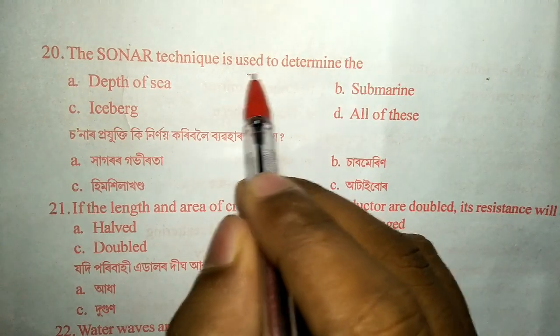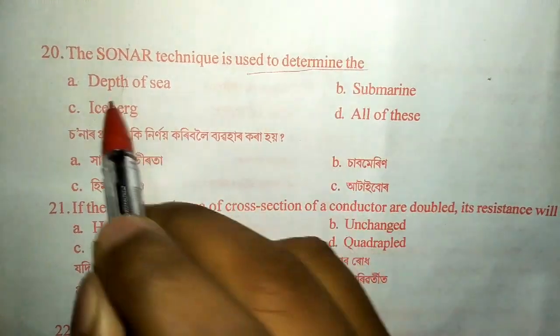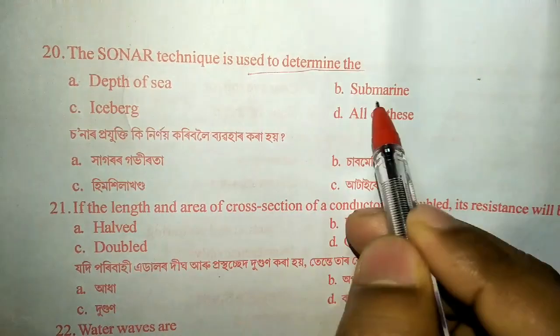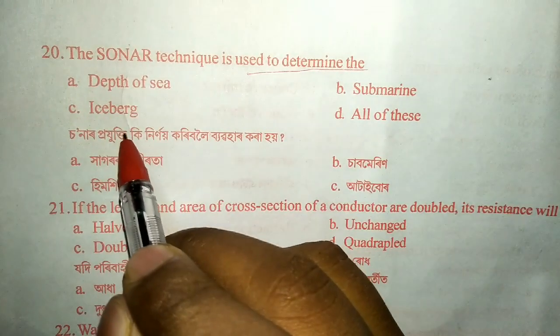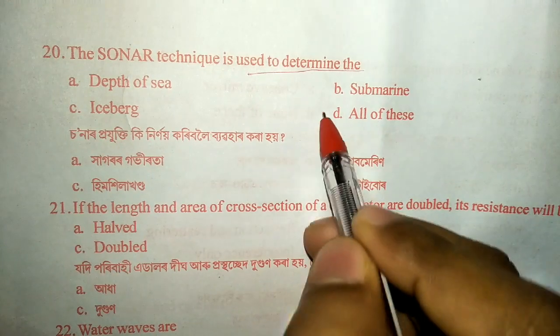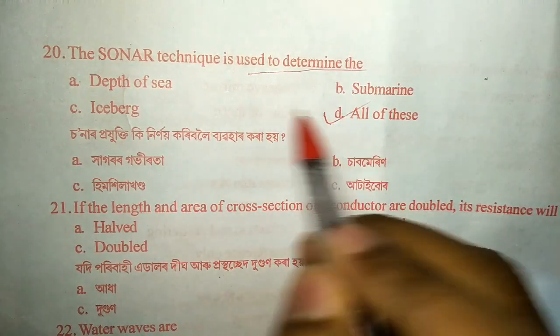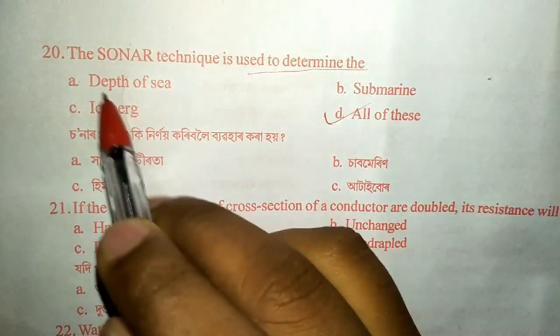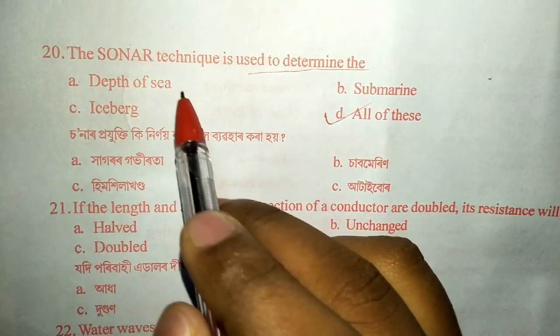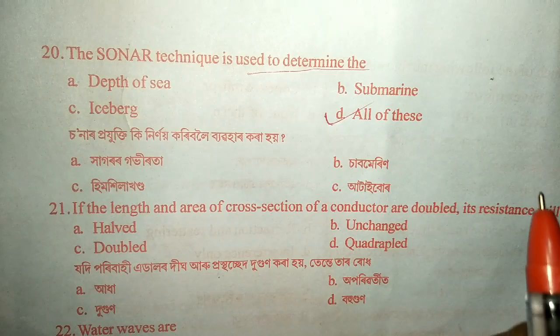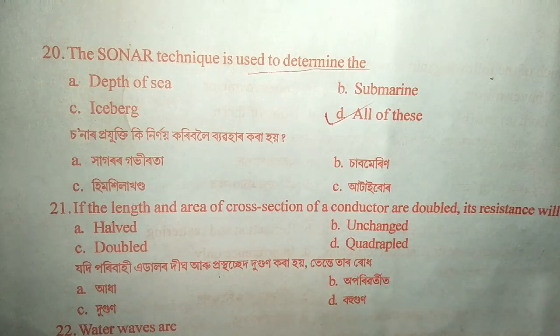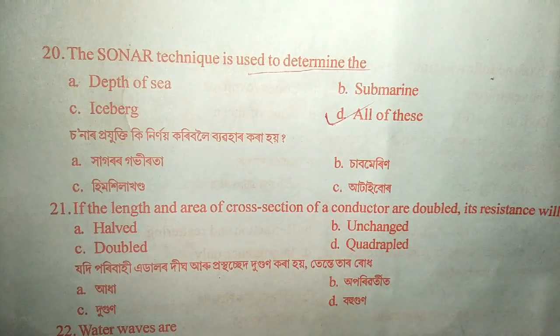Question number twenty: the sonar technique is used to determine the depth of the sea, locate submarines, detect icebergs, or all of these. The answer is all of these, because sonar using ultrasound is used for all these purposes.